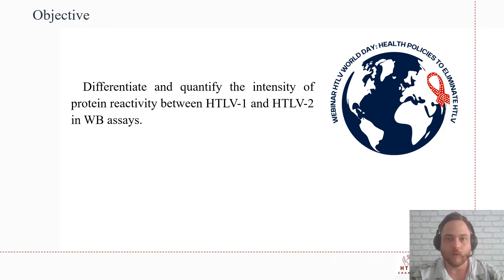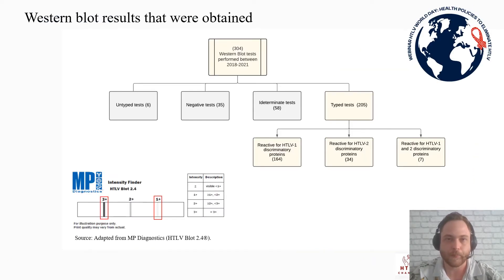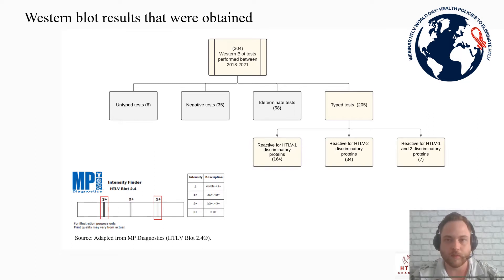Therefore, the aim of this study was to differentiate and quantify the intensity of protein reactivity between HTLV-1 and HTLV-2 in the WB assay. For this analysis, 205 tests were selected: 106 were positive for HTLV-1, 30 for type 2, and 7 co-infected for both types.